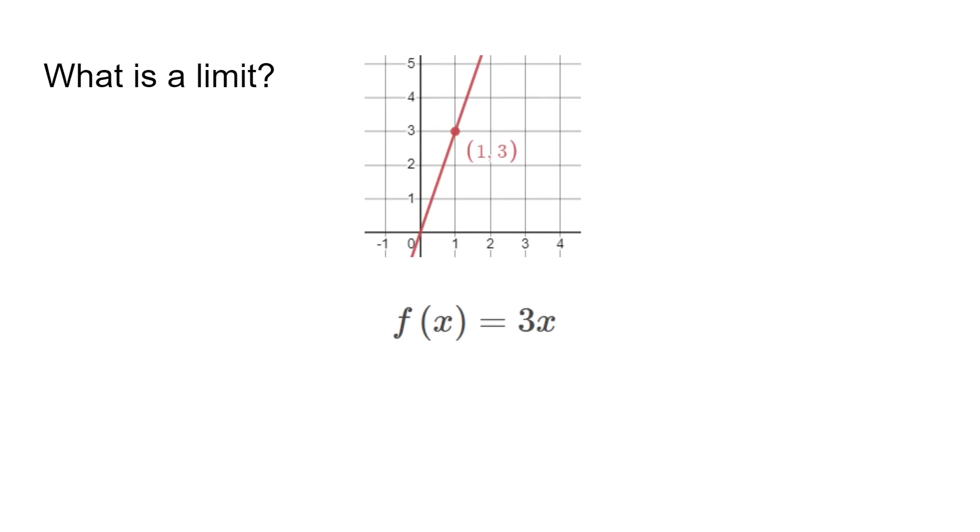Let's start by defining what is a limit and what does it mean. Here we have a graph of y equals 3x. We can say that the limit of f as x approaches 1 is 3. This is because as the x values approach 1, the y values converge towards 3.